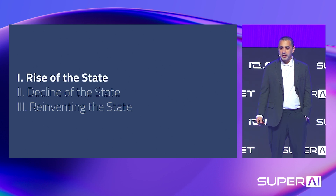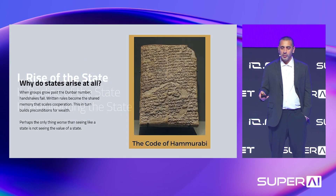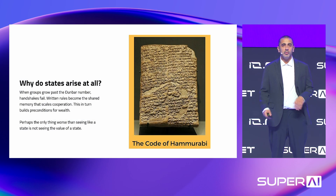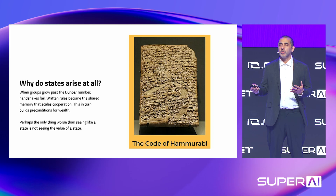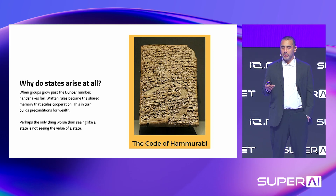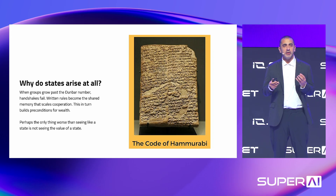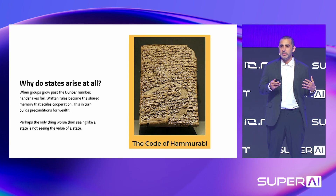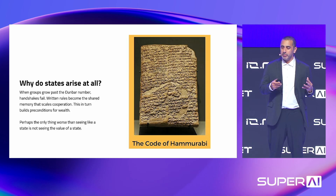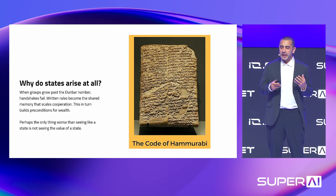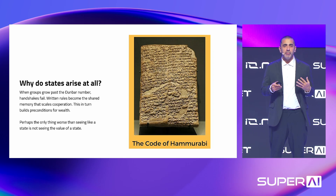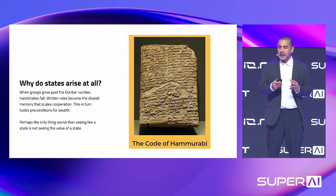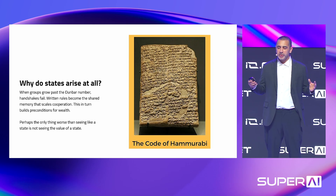So the rise of the state: to understand what government is, why do states arise at all? This is the Code of Hammurabi, maybe one of the first known instances of written law. Essentially, once you get a group past the Dunbar number — past about 150 people — not everybody knows everybody. Handshakes fail, people don't remember everyone, so you need written rules. And written rules scale, and that builds the preconditions for wealth.